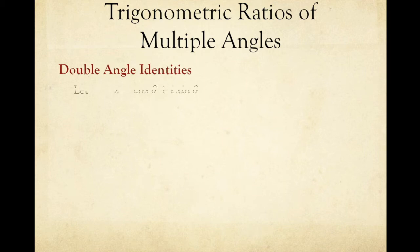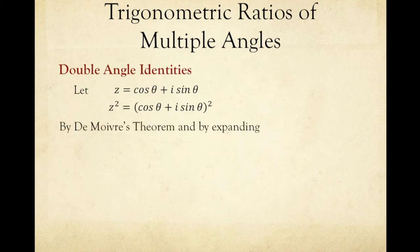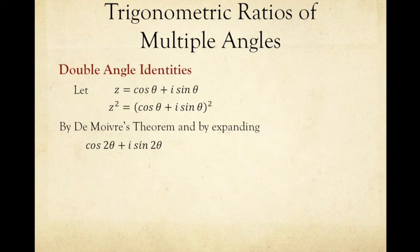In order for us to begin, we let z be equal to cosine theta plus i sine theta — this is our complex number with a modulus of 1. If we square both sides, we get z squared equals cosine theta plus i sine theta to the power of 2. Applying De Moivre's theorem gives cosine 2 theta plus i sine 2 theta. This also equals the expanded form: cosine squared theta plus 2i sine theta cosine theta plus i squared sine squared theta.